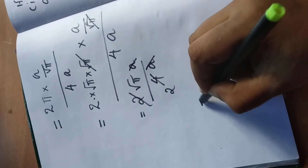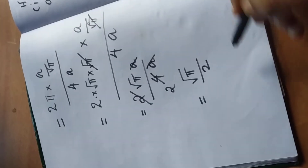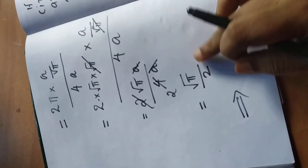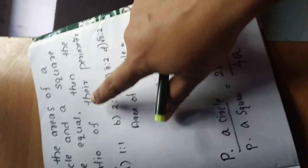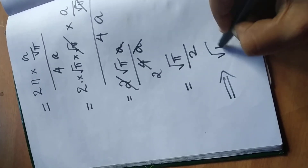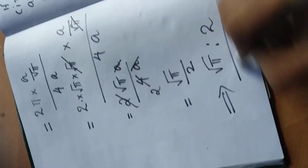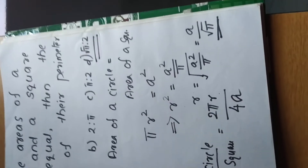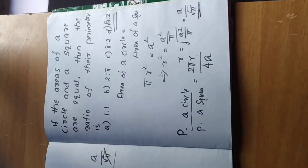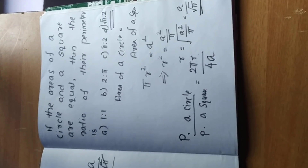So the final answer is √π : 2. The ratio of their perimeters is √π is to 2. The answer is option D — root π is to 2. Thank you for watching, please subscribe.